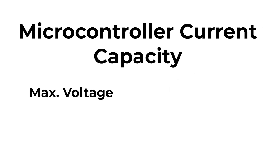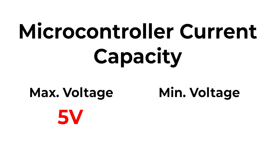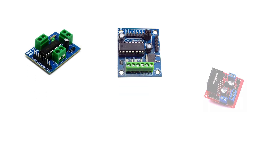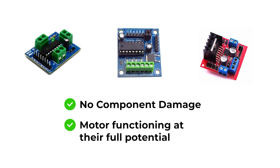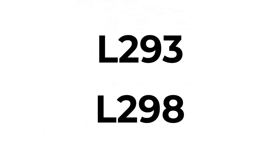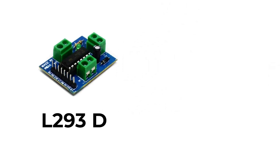To run the motors at high speed we require motor drivers. We also cannot connect the motors directly to the microcontroller because the microcontroller produces voltages as high as 5 volts and as low as 0 volts, and these voltages are insufficient for the motors to run. That is why we need motor drivers, so that none of the components are damaged and the motors run at their full potential. The most commonly used motor driver ICs are from the L293 and L298 series.